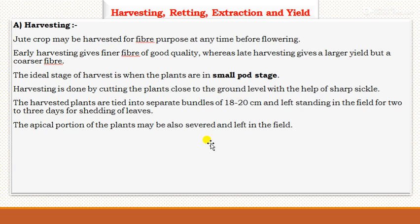For harvesting, when grown for fiber purpose, harvesting should be done before flowering. Early harvesting gives finer fiber of good quality, whereas late harvesting gives larger yield but coarser fiber. Since finer fiber has better market value, the ideal stage for harvest is when plants are at the small pod stage. Plants are cut close to the ground level with a sharp sickle or knife, tied into bundles of 18 to 20 cm, and left standing in the field for 2 to 3 days for shedding of leaves. The apical portion may also be removed to avoid decomposition or production of weak fiber.